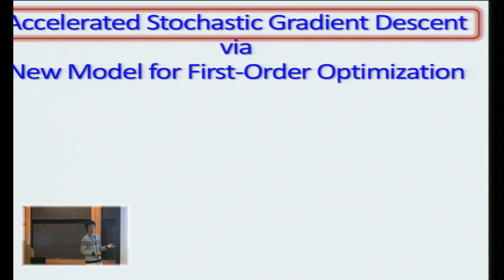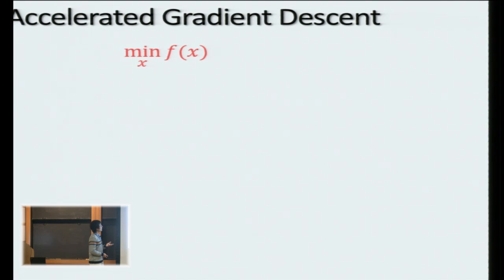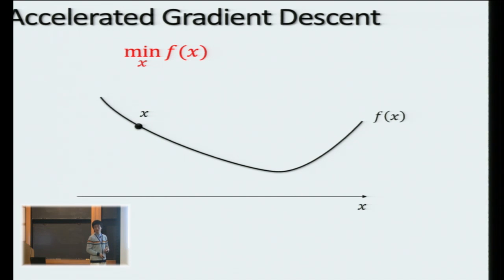So let me begin with the first one. So even before that, let me remind you what accelerated gradient descent is. So accelerated gradient descent is a first-order method, meaning that it tries to minimize a convex function, say f(x), by making first-order queries to the function.